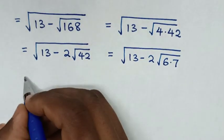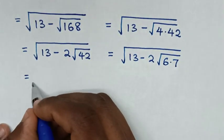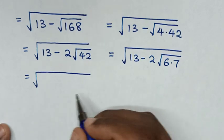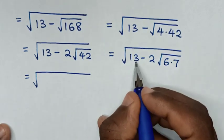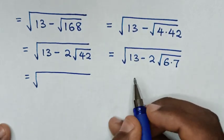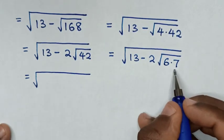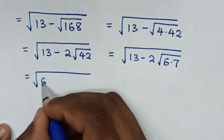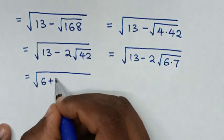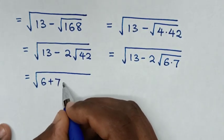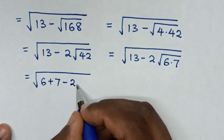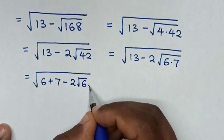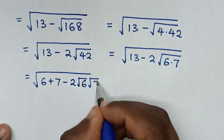Then it will be equal to square root of — from 13 — because here square root of 6 times square root of 7, and 13 is the same as 6 plus 7. Then minus 2 square root of 6 times square root of 7.